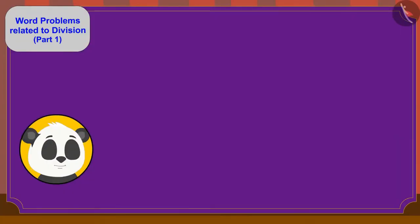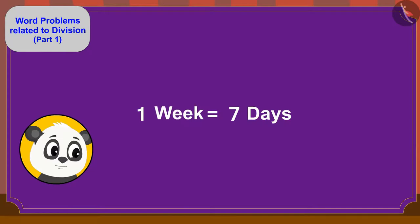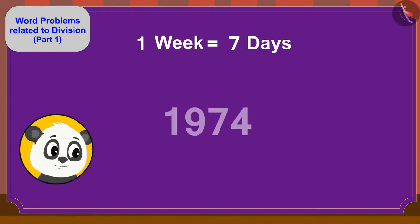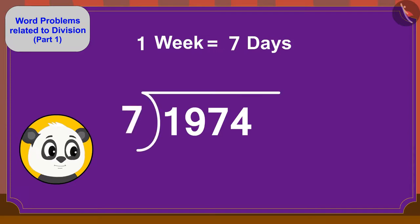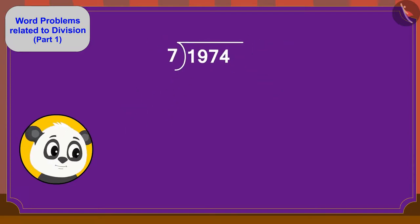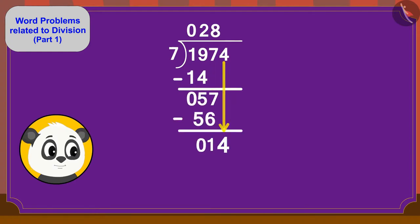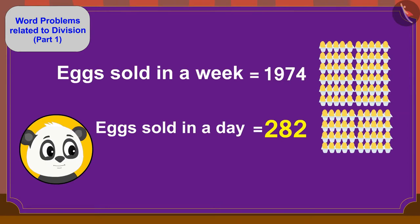Yes. There are 7 days in a week. Therefore, to find a solution to this question, we have to divide 1974 by 7. We can find the answer in this way. Golu will have to sell 282 eggs a day.